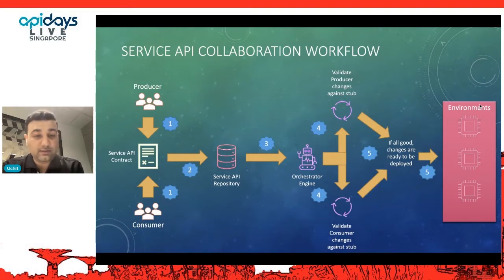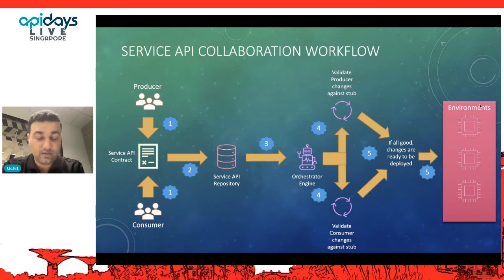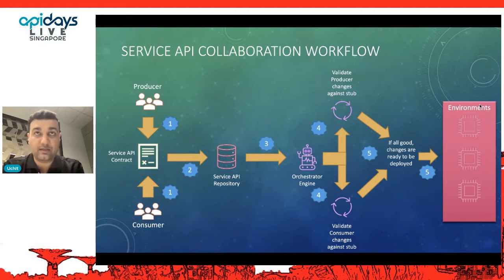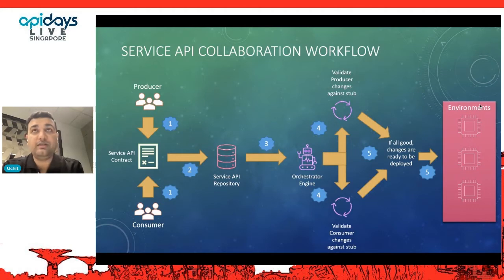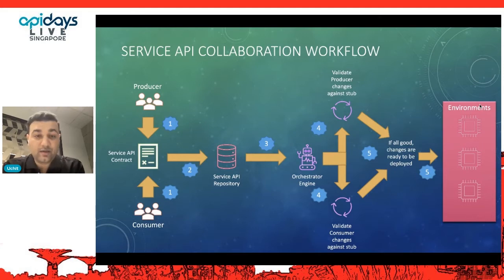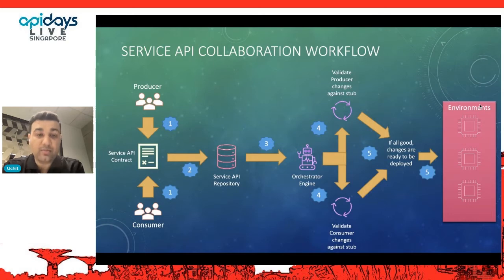Once the contract is ready, it is pushed to the service API repository — a Git repository or a service API-specific repository. It should be pushed by both producer and consumer teams as one contract, because both parties are aligned on what is being requested and what is being sent. This repository becomes the key source of truth — capturing who modified the contract, whether it has changed, and how it will be used across other systems.